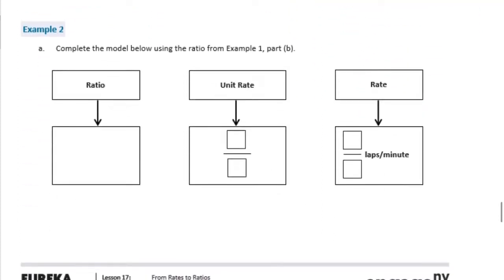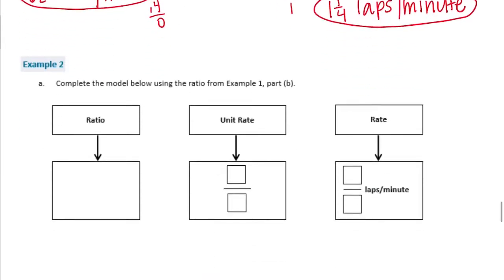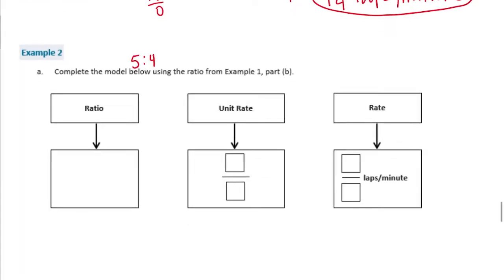Example 2. Complete the model below using the ratios from example 1 part B. Example 1 part B was 5 to 4. And that was the ratio. The unit rate would be 5 fourths. And then the rate was 5 fourths laps per minute.